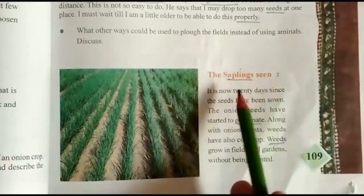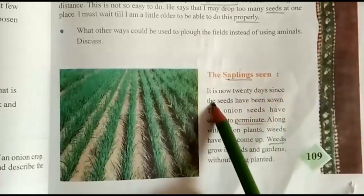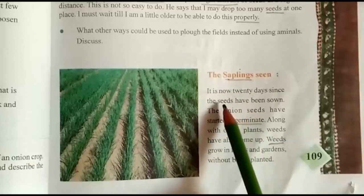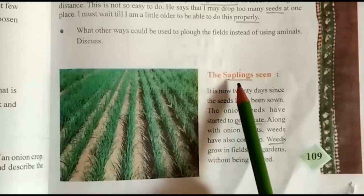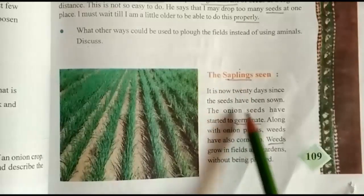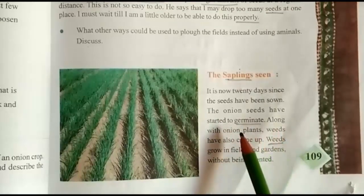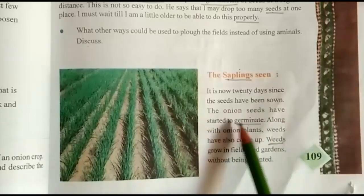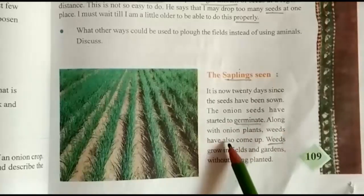Sampling means podha — seedling. It has not been 20 days since the seeds were sown. Within 20 days we can see small seedlings start to appear. The onion seeds have started to germinate — ankurit — along with the onion plants. Weeds have also come up. Weeds grow in fields and gardens without being planted.